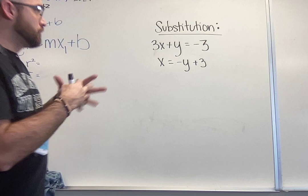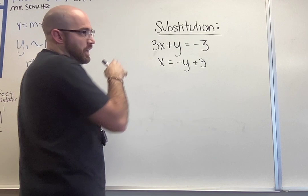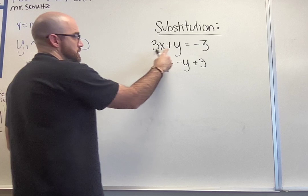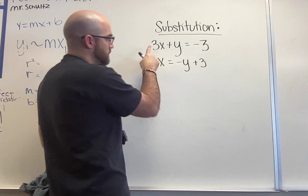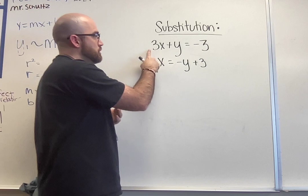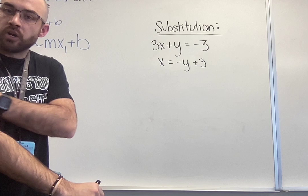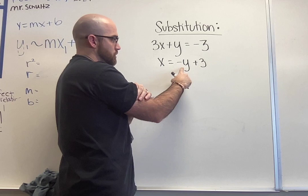For this problem right here we want to look through both of our equations and identify a variable that is by itself or the closest to being by itself. If I look at this first one, 3x plus y equals negative 3, x has got a coefficient in front of it so that's not what we'd want to solve for. y is pretty close to being by itself but I would still have to move this 3x. And in this problem we have x already by itself. It's equal to negative y plus 3.